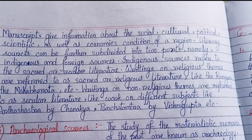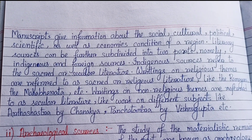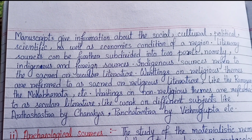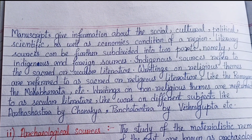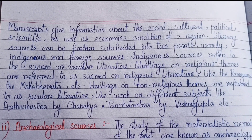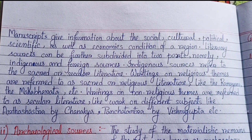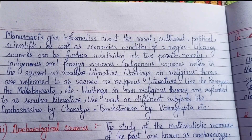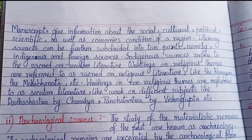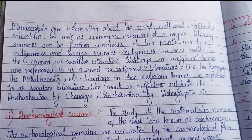Manuscripts give information about the social, cultural, political, scientific as well as economic condition of a region. Literary sources can be further subdivided into indigenous and foreign sources. Indigenous sources refer to sacred or secular literature. Writings on religious themes are referred to as sacred or religious literature, like the Ramayana, the Mahabharata, etc. Writings on non-religious themes are referred to as secular literature, like Arthashastra by Chanakya and Panchatantra by Vishnugupta.